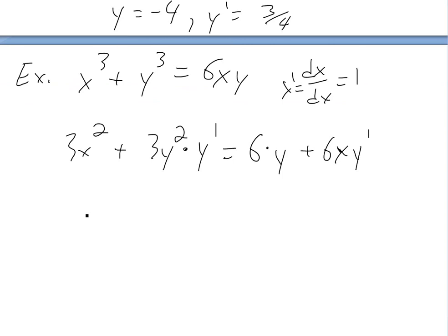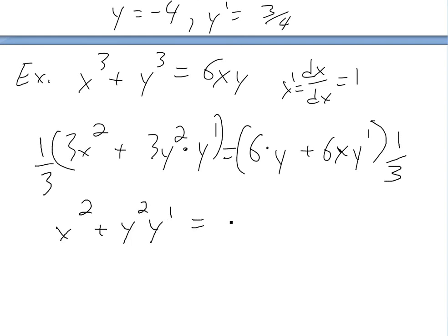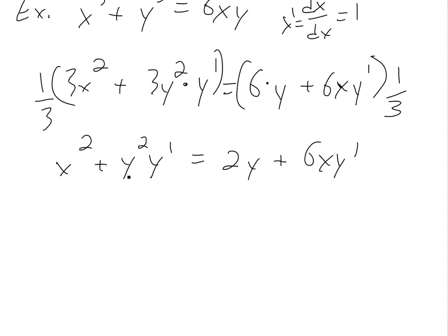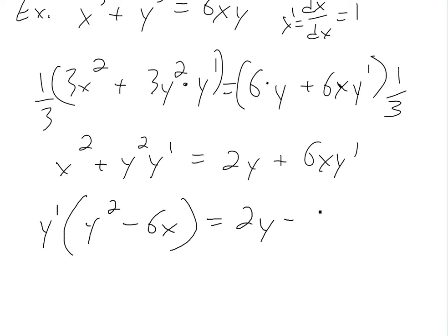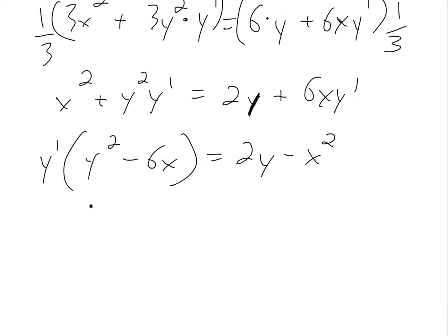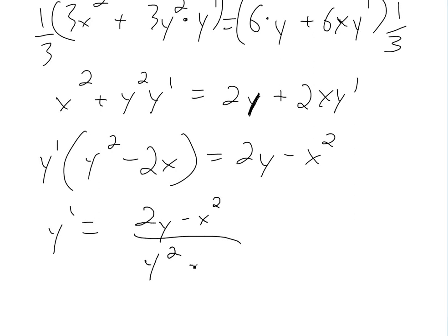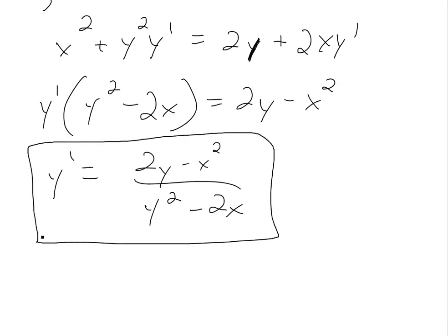Now we solve for y prime. Dividing everything by 3 to simplify, we get x squared plus y squared times y prime equals 2y plus 2x times y prime. Rearranging — bringing the y prime terms together — we get y squared minus 2x times y prime equals 2y minus x squared. So y prime equals 2y minus x squared, all divided by y squared minus 2x.